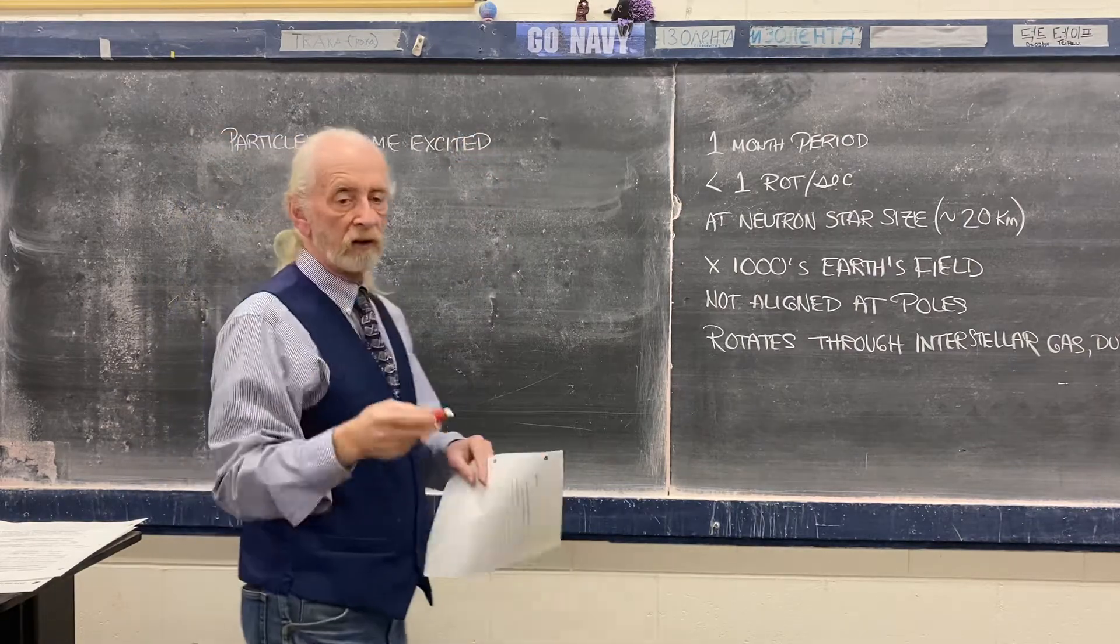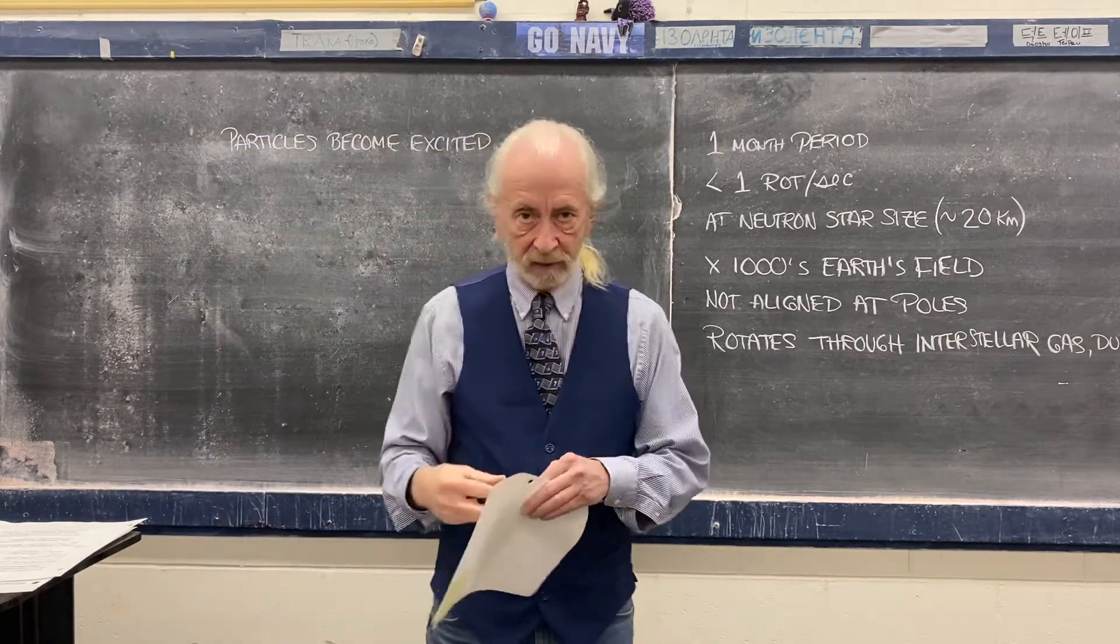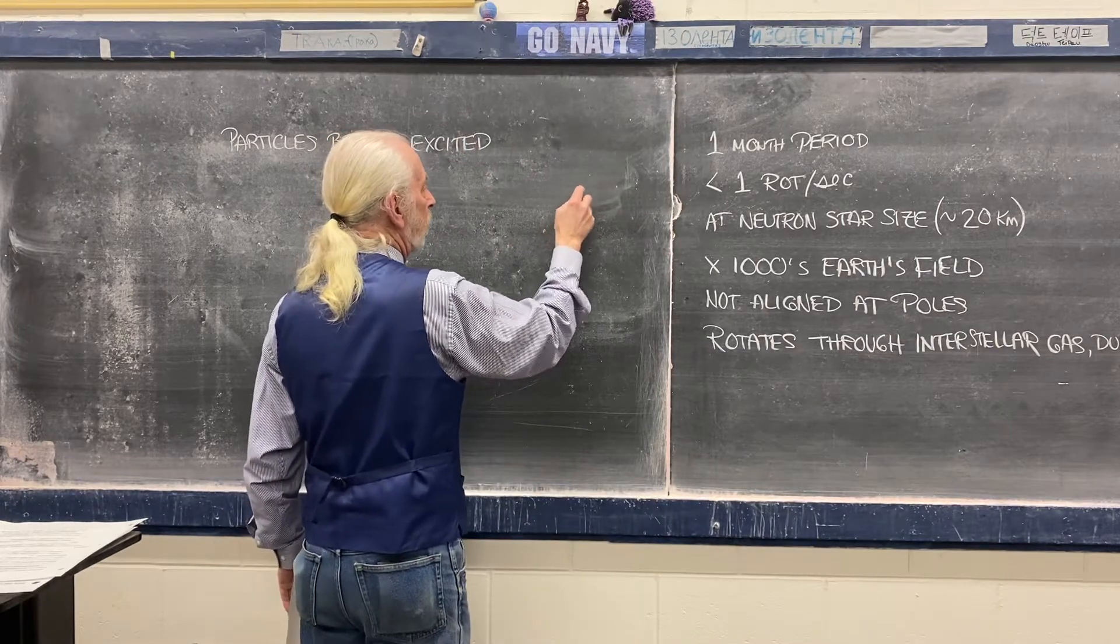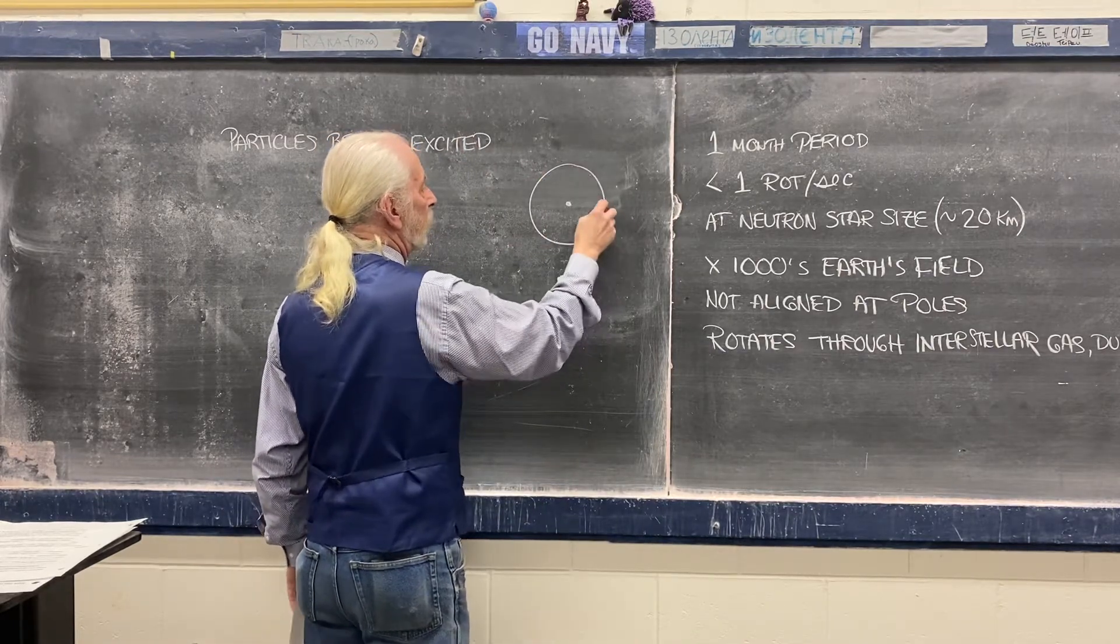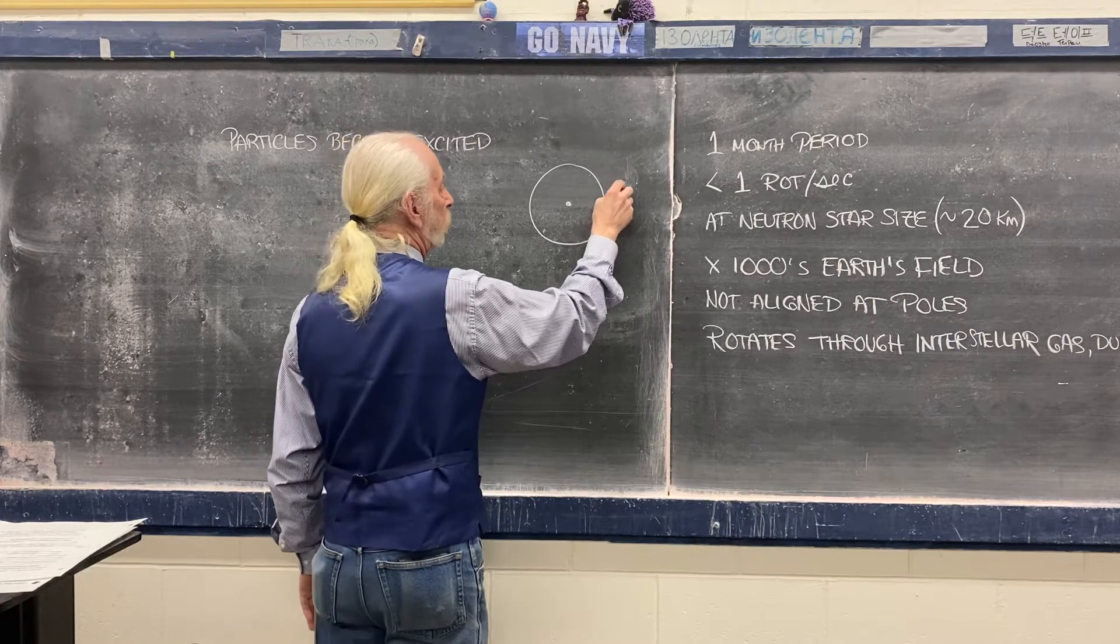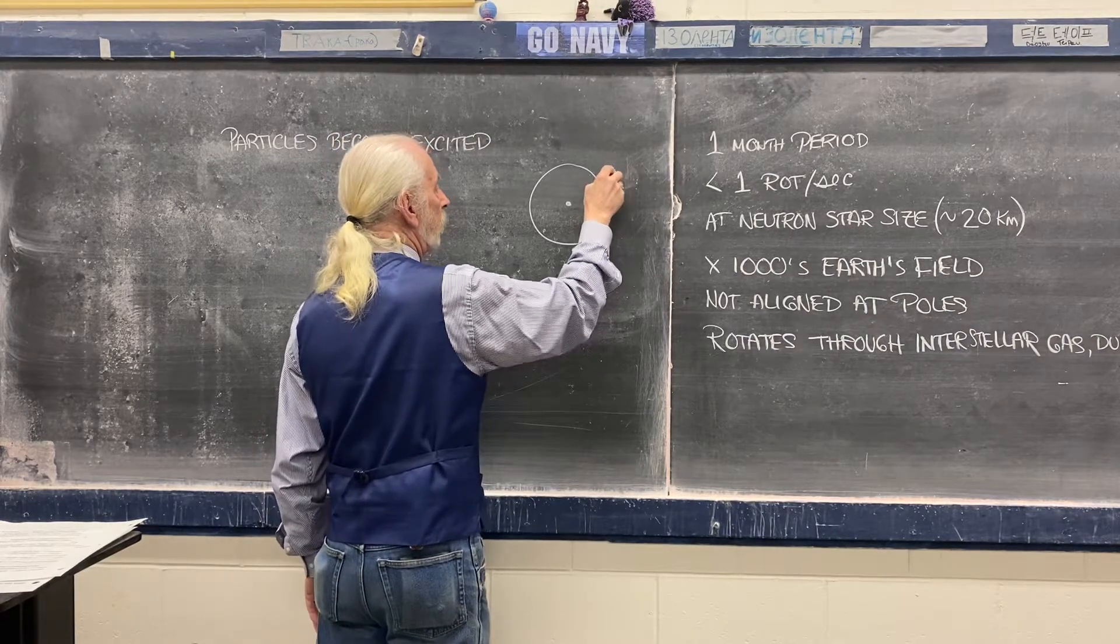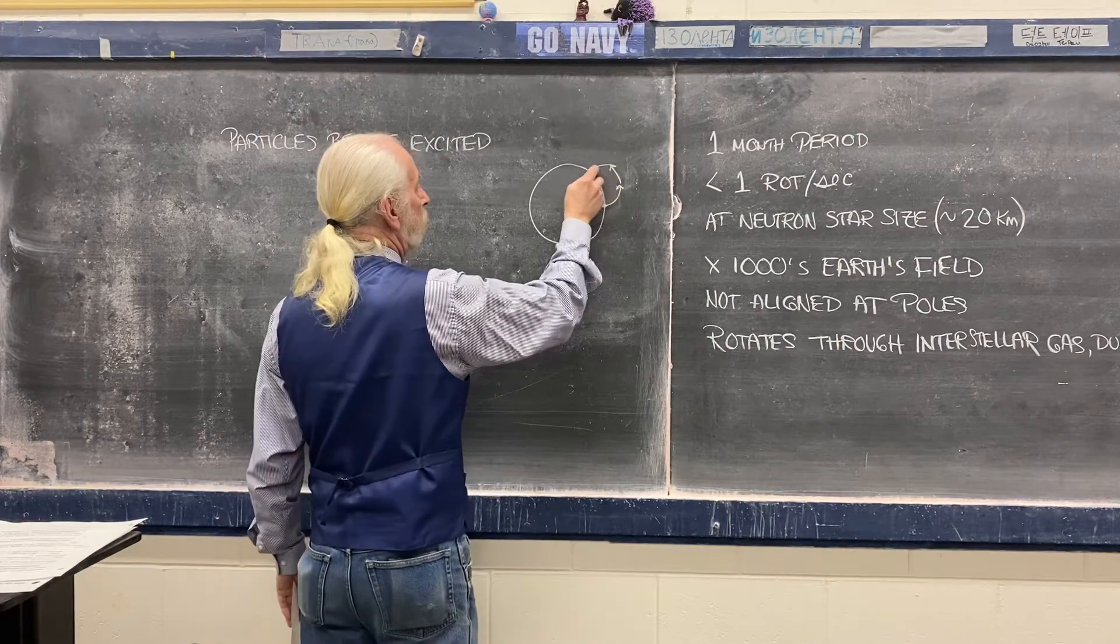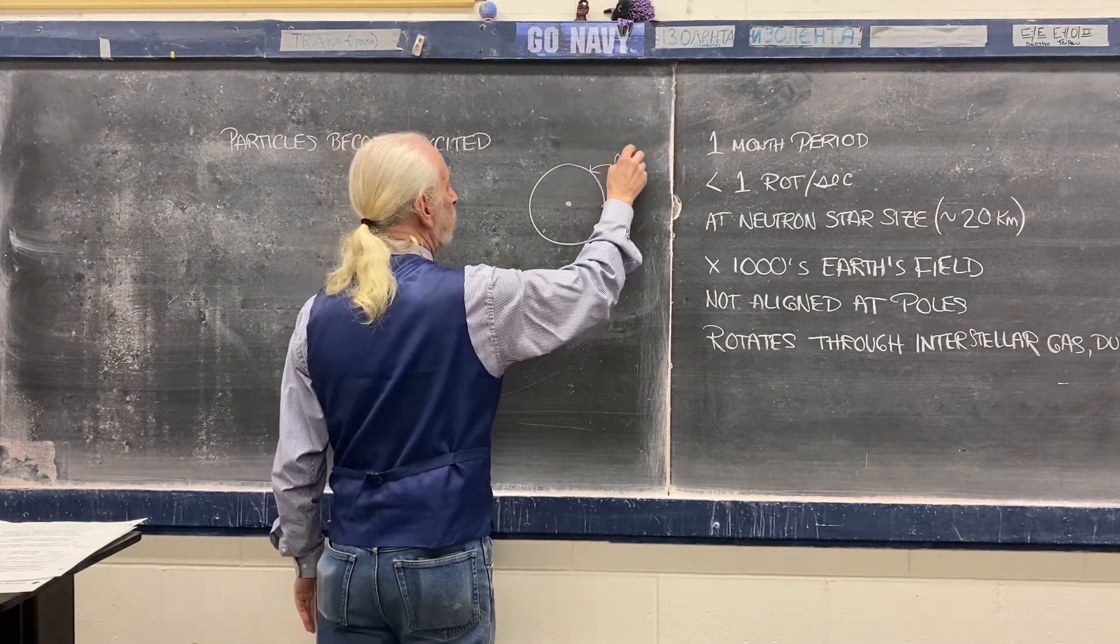Now, remember, when we talked about excitation of an atom, what we're talking about is the electron in that atom jumping out to a higher energy level. That's excitation. And as that electron moves back down to the ground state, it emits a photon.